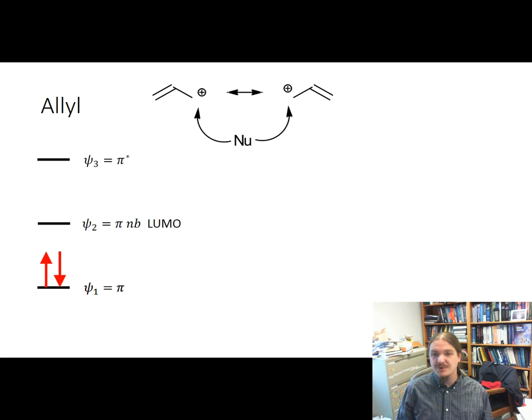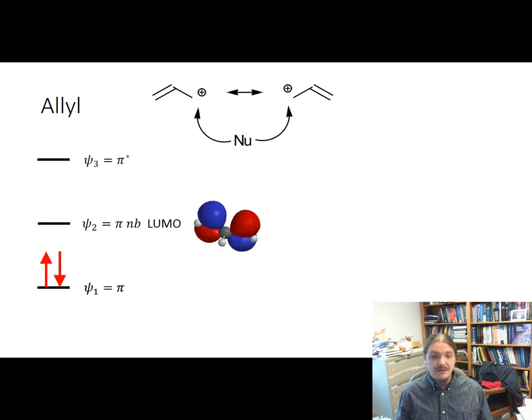Here's an example using the allyl cation. The allyl cation can react with nucleophiles, and it reacts with nucleophiles at its LUMO. So it can react with nucleophiles at either end of that chain. And the LUMO's orbitals have electron density at either end of the chain, but not in the middle.